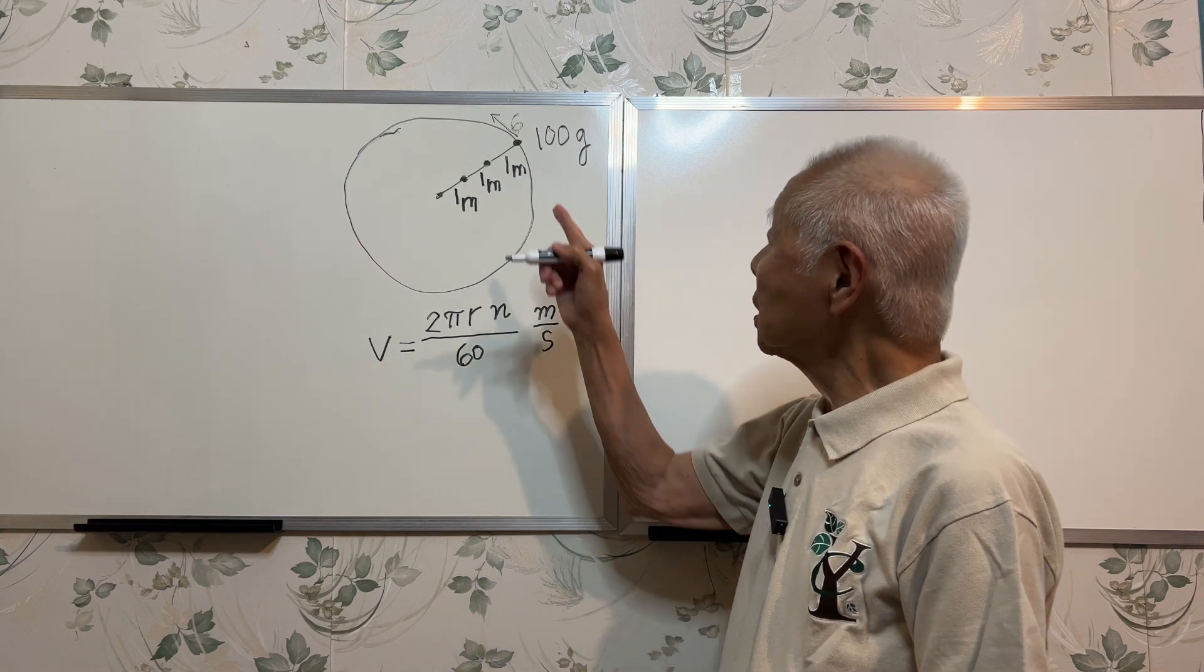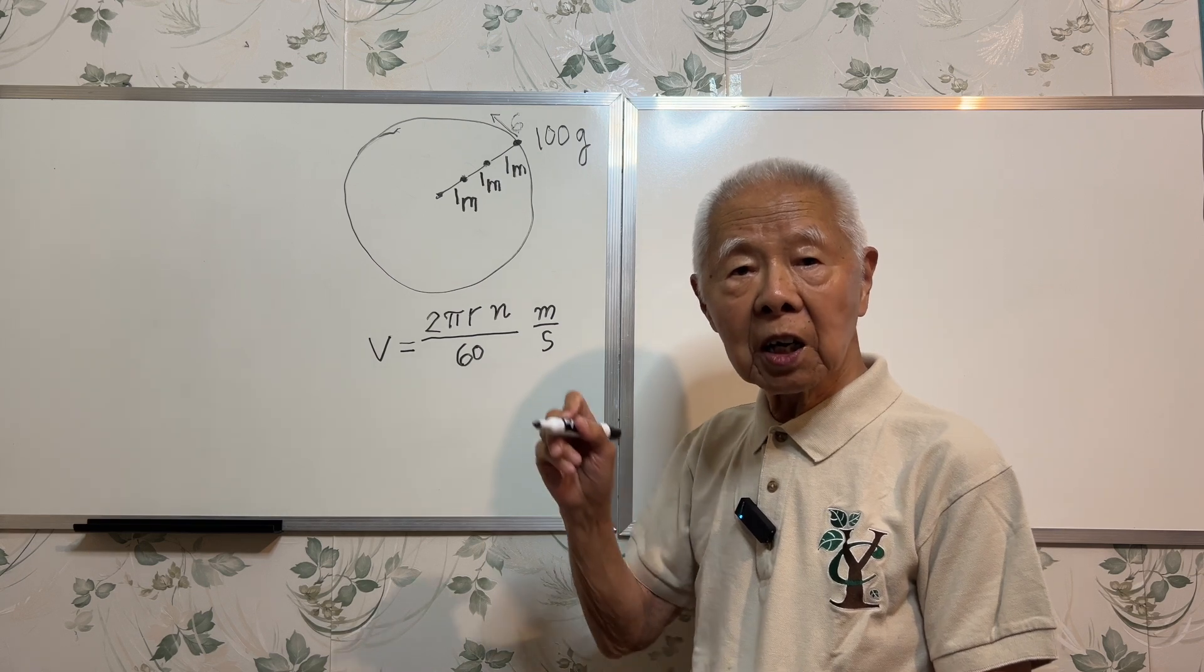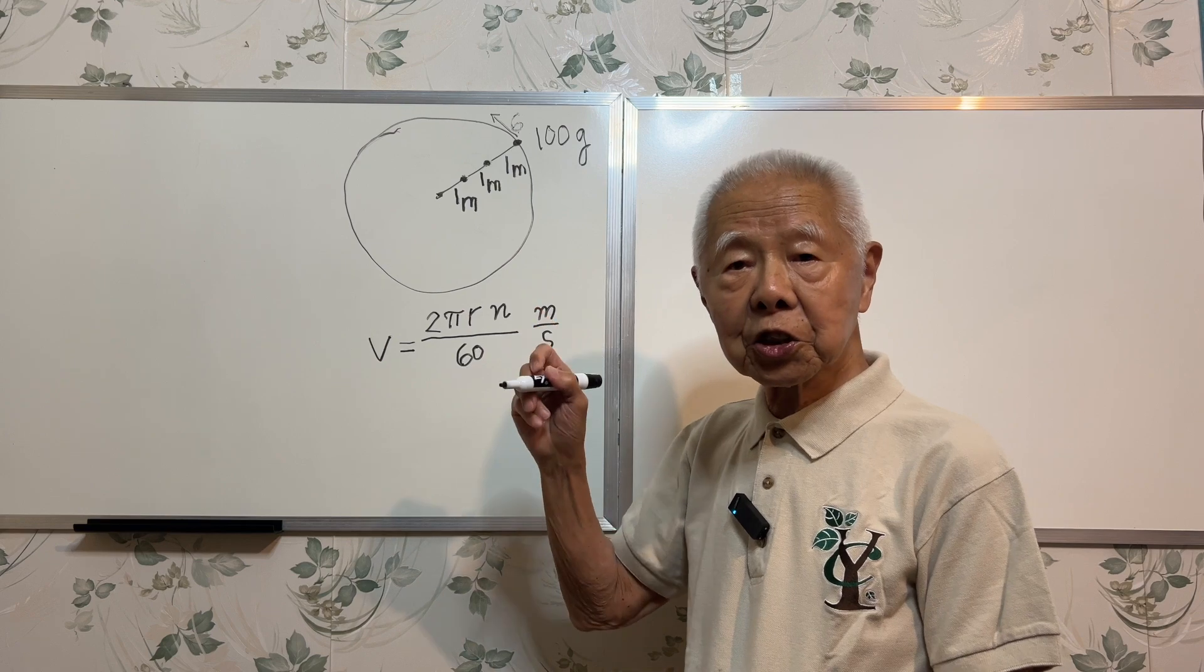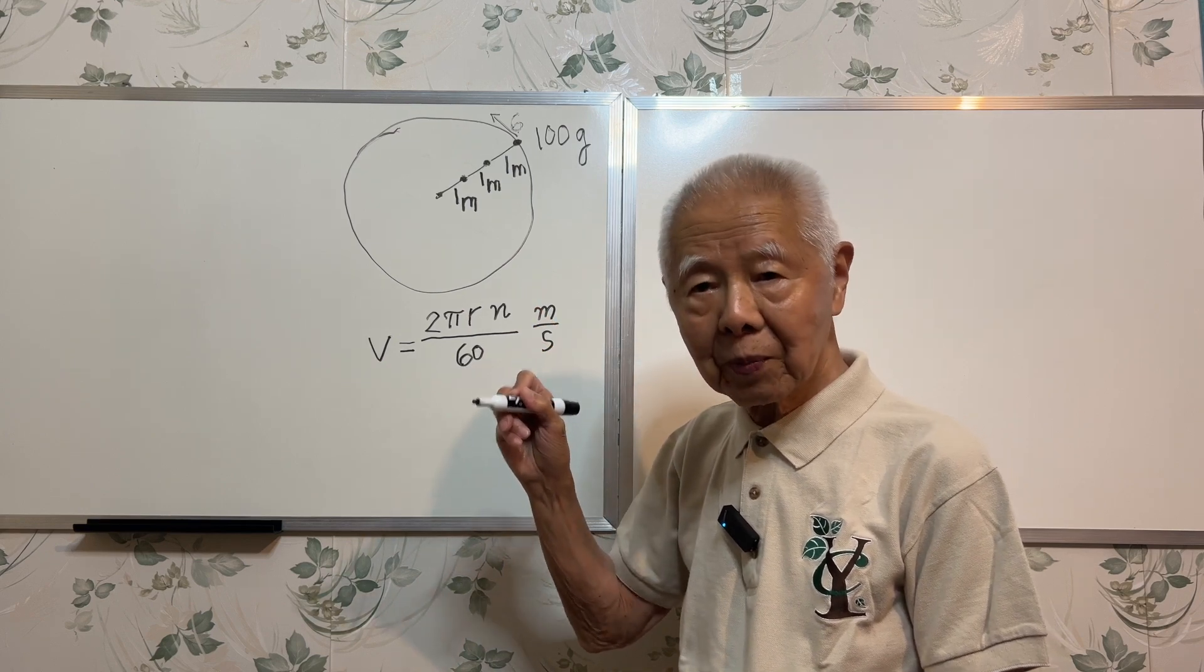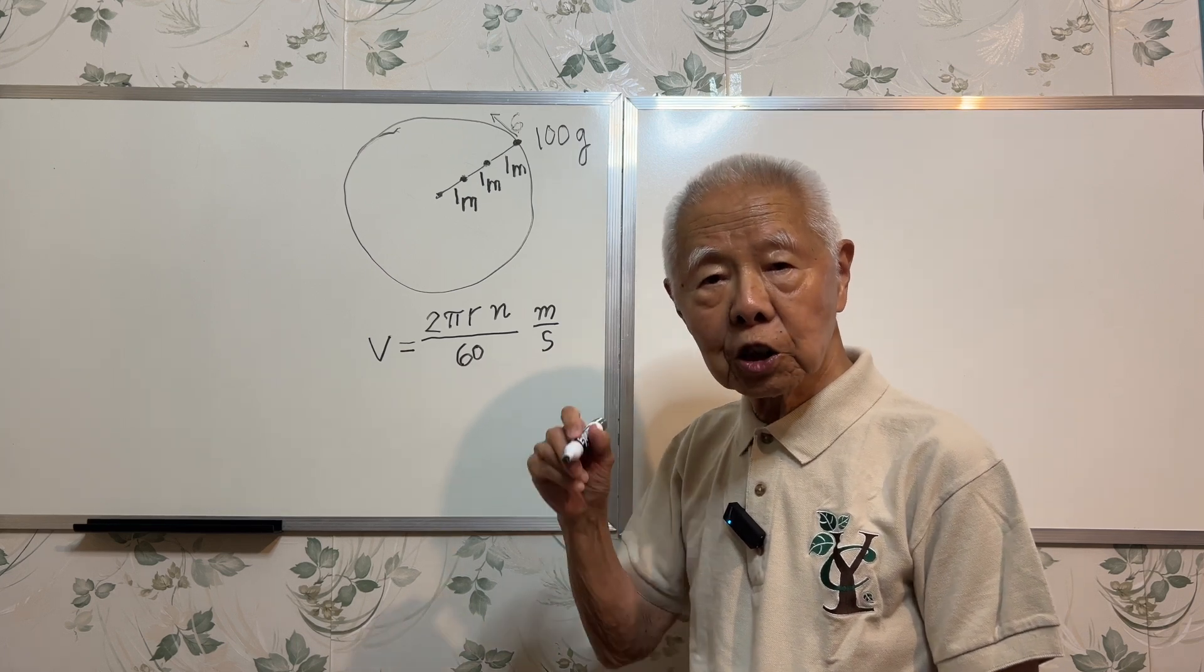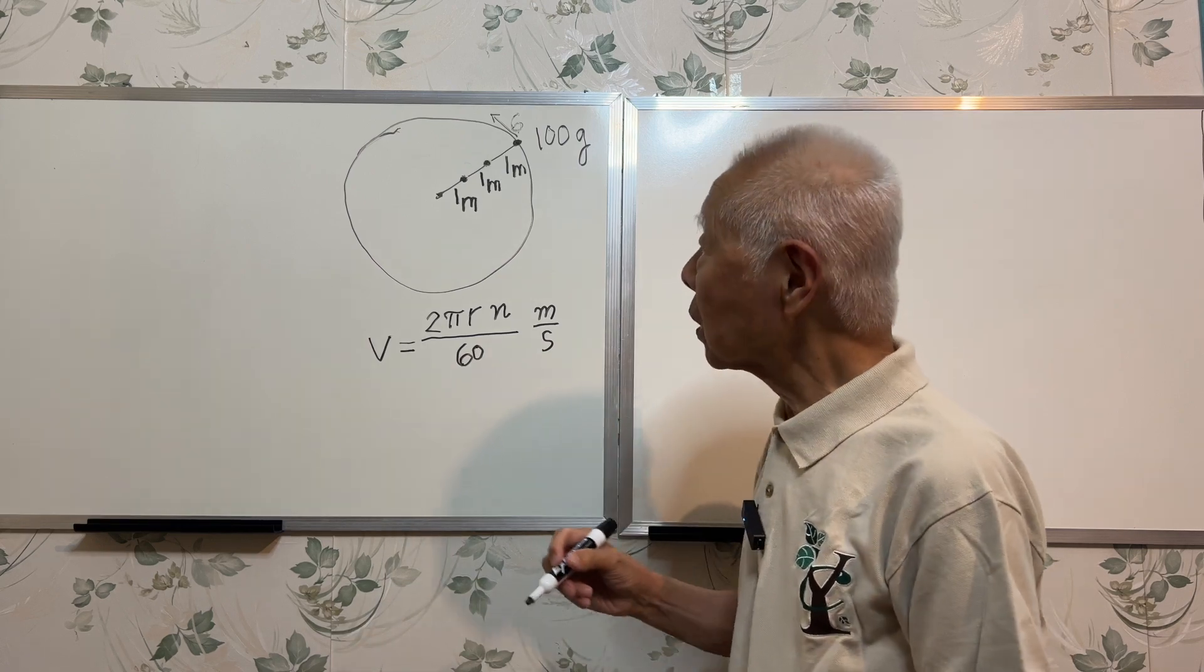Now, the 6 meters per second, the speed of the outermost body, is at the radius of 3 meters. So first of all, I want to find the speed of the other two bodies.